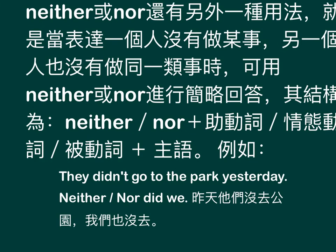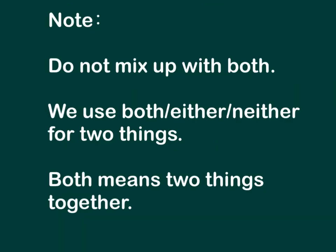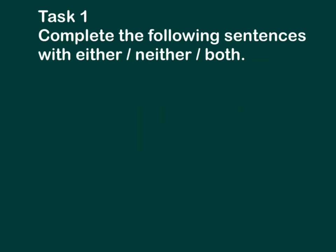Note: Do not mix up 'both', 'either', and 'neither'. We use both, either, and neither for two things. 'Both' means two things together. Task one: Complete the following sentences with either, neither, or both.